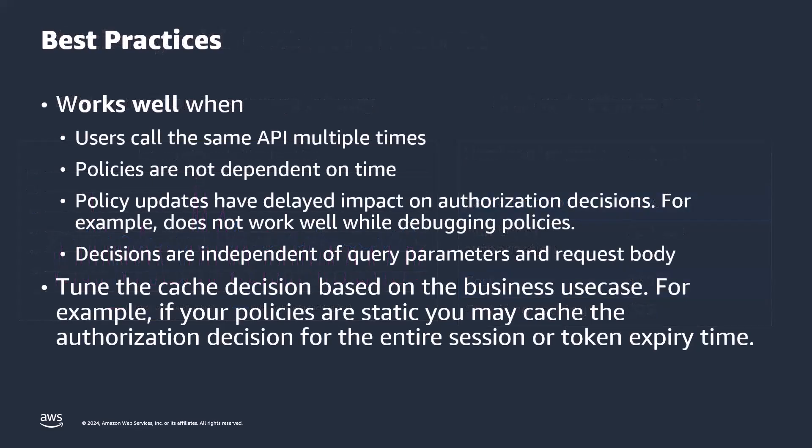When using authorization decision caching, there are a few best practices to keep in mind. First, users should call the same API multiple times — this ensures high cache hit rates. Second, your policies should not be dependent on time. Third, you should realize that any updates you make to policies will have a delayed impact on the data plane and on the authorization decisions that affect your API calls.